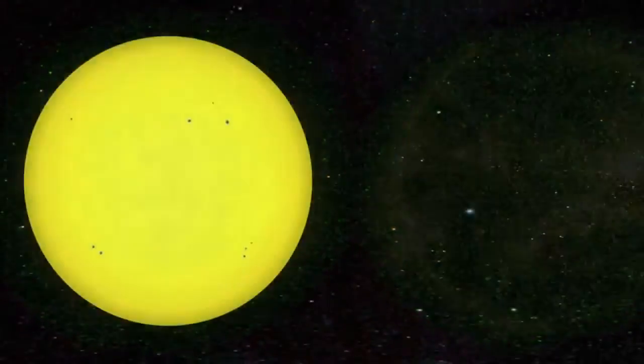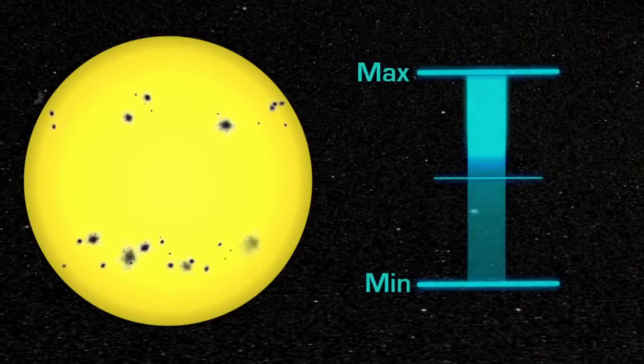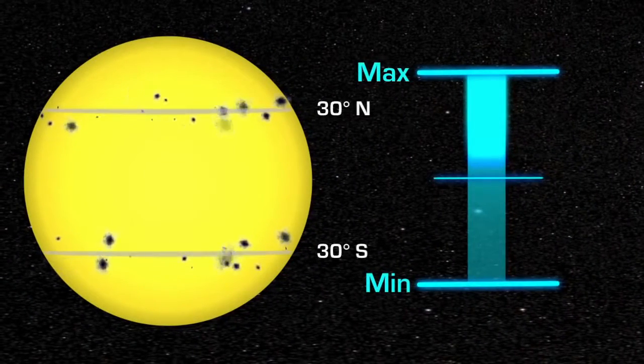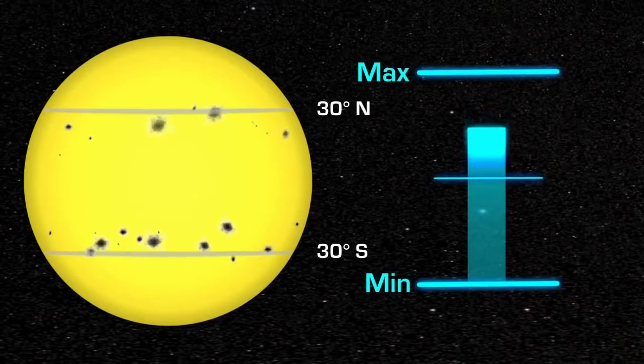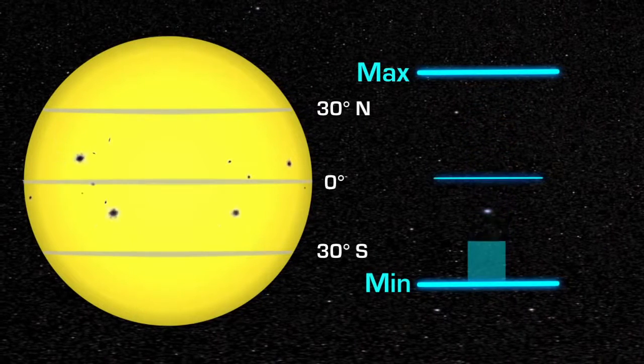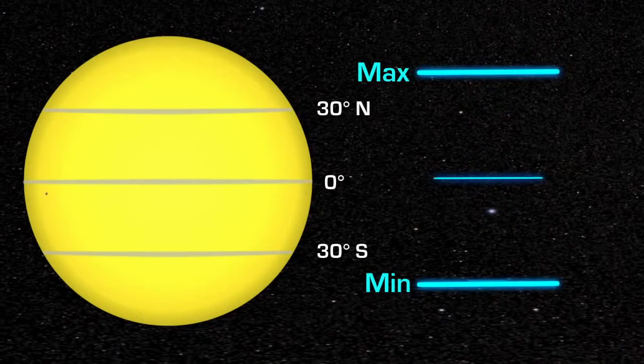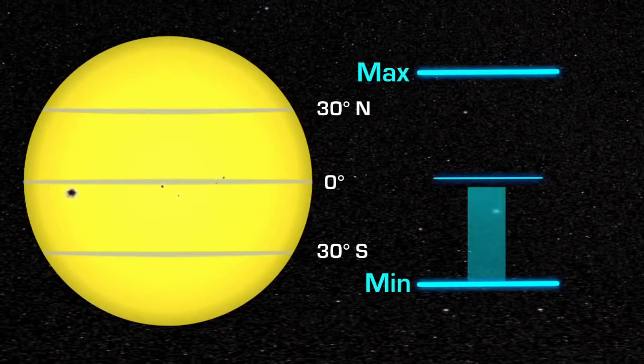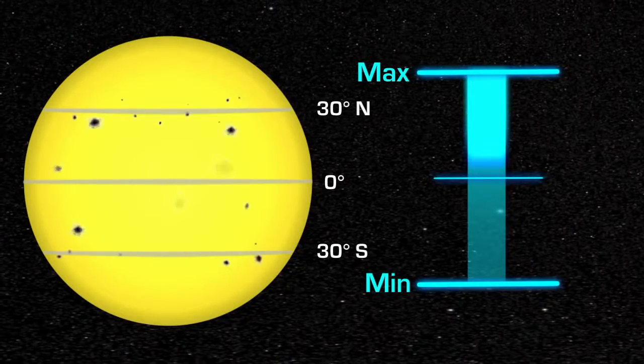During this cycle, the location of the sunspots also changes. They are at middle latitudes during solar maximum and move closer to the equator as the Sun approaches solar minimum. At solar minimum, there are sometimes no sunspots to observe. At solar maximum, there can be many at the same time.